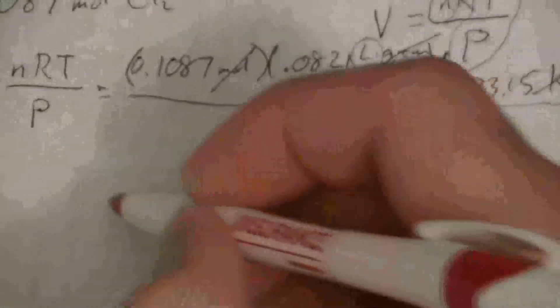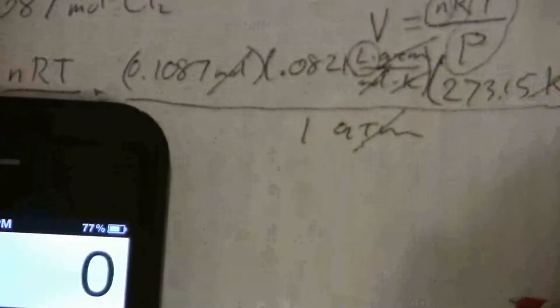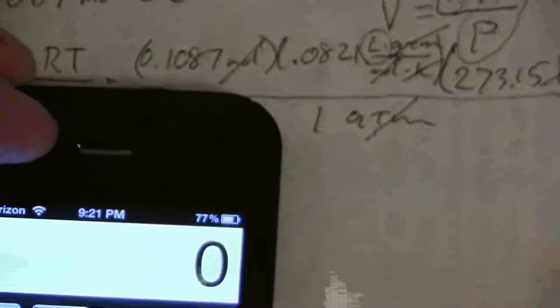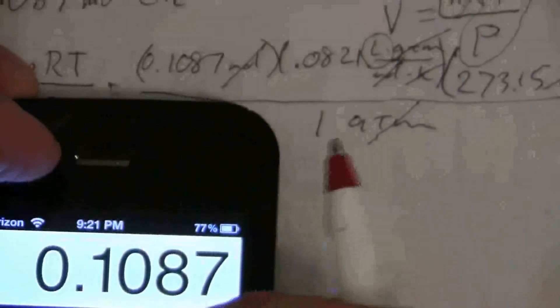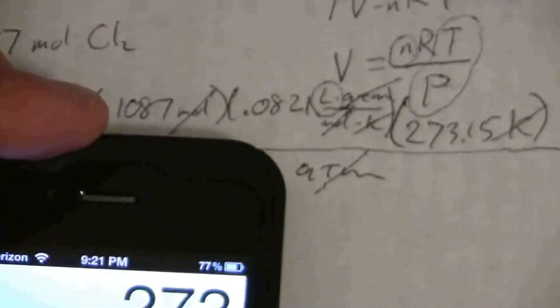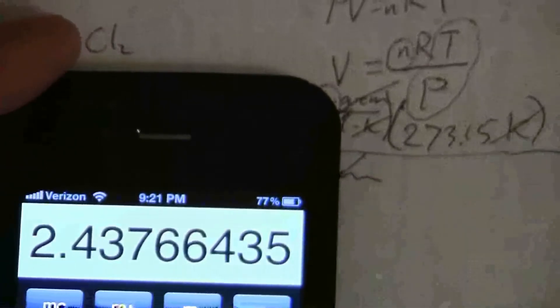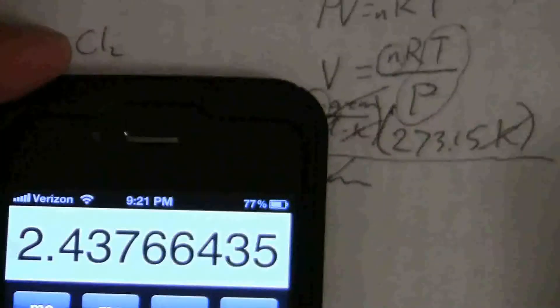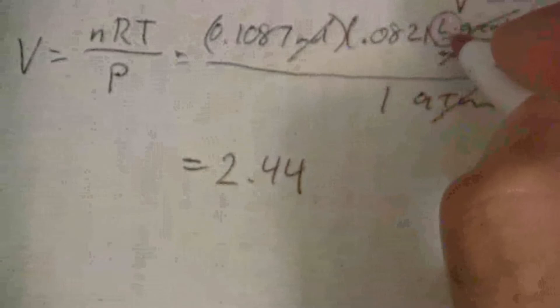So when you calculate this out, we have 0.1087 times 0.0821 liter atmospheres per mole kelvin times 273.15, and there we go: 2.44. Now we can round it off. This will be 2.44 liters.